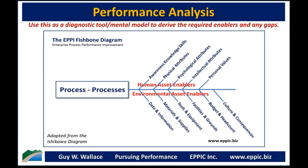At the top of the fishbone are the human asset enablers — what do humans bring to the performance process? They bring awareness, knowledge, and skills; physical attributes and capabilities; psychological attributes and capabilities; intellectual attributes and capabilities; and personal values. Either all the things the human brings are adequate to the needs of the process, or they are not. Most of us in ISD and learning experience design are focused on that awareness, knowledge, and skills — but there are other variables to performance.